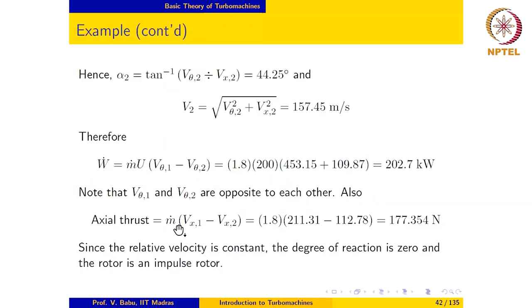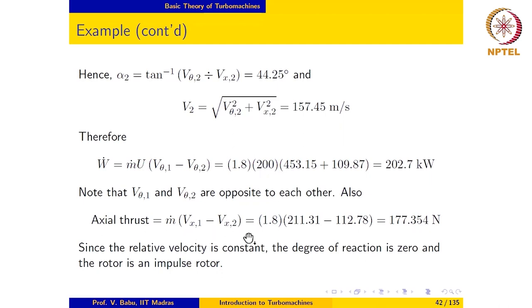The axial thrust is the force exerted on the rotor in the axial direction. The change in axial momentum of the fluid is ṁ·(vx2 minus vx1), which is the axial force exerted on the fluid. By Newton's third law, an equal and opposite force is exerted on the rotor, giving ṁ·(vx1 minus vx2). This comes out to 177.354 Newtons in the positive x direction. Since vx2 is less than vx1, the force on the fluid is in the negative x direction, so the reaction force on the rotor is in the positive x direction.